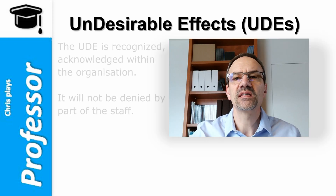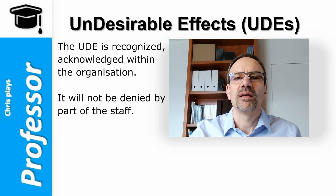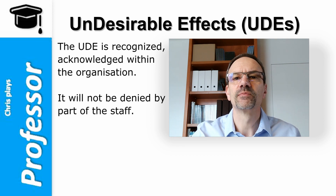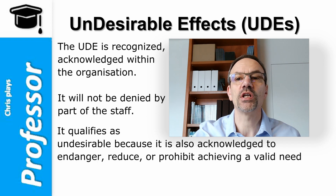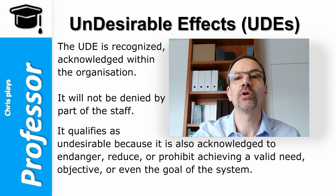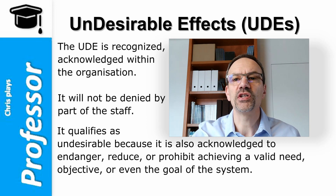Effect and existence being indisputable means that the UD is recognized and acknowledged within the organization — it is nothing that will be denied by part of the staff. And it qualifies as undesirable because it is also acknowledged to endanger, reduce, or prohibit achieving a valid need, objective, or even the goal of the system — meaning the organization, enterprise, company, and so on.